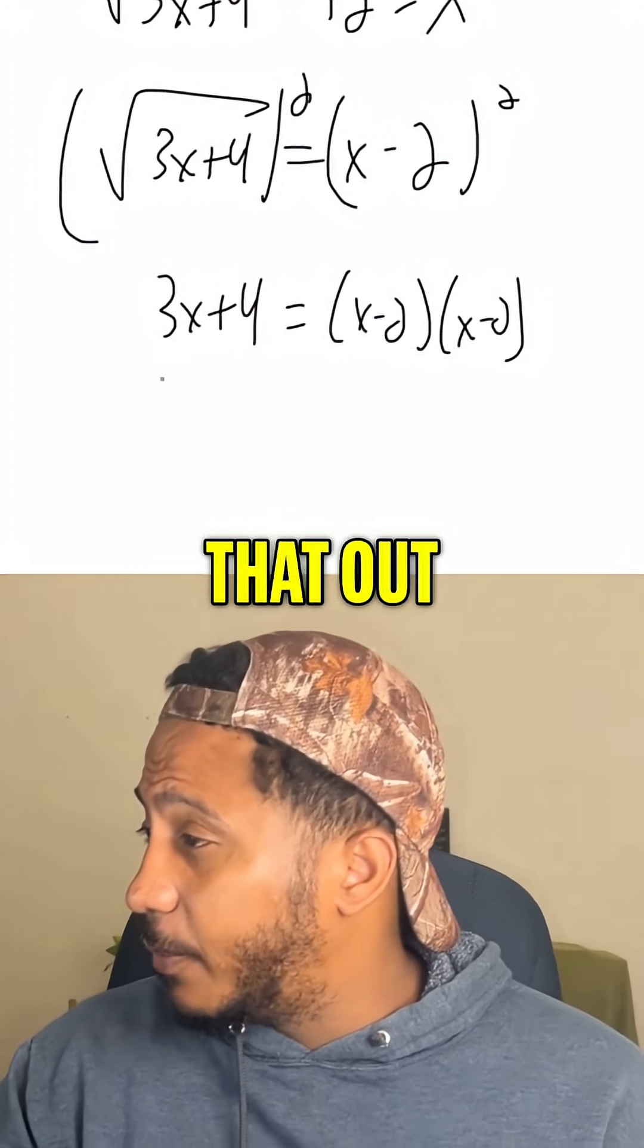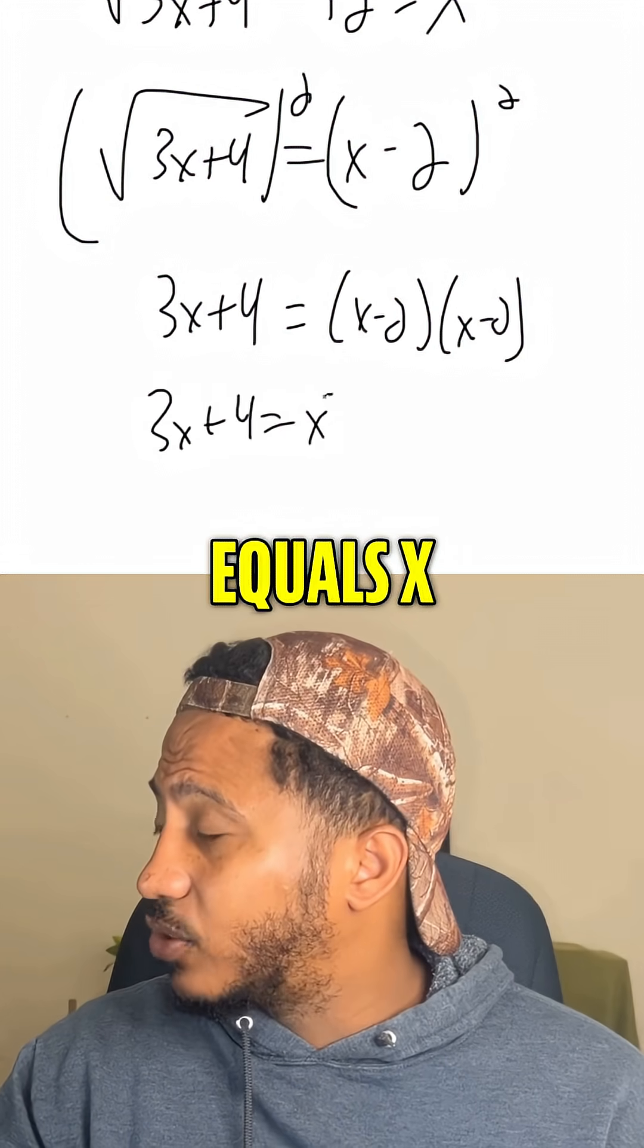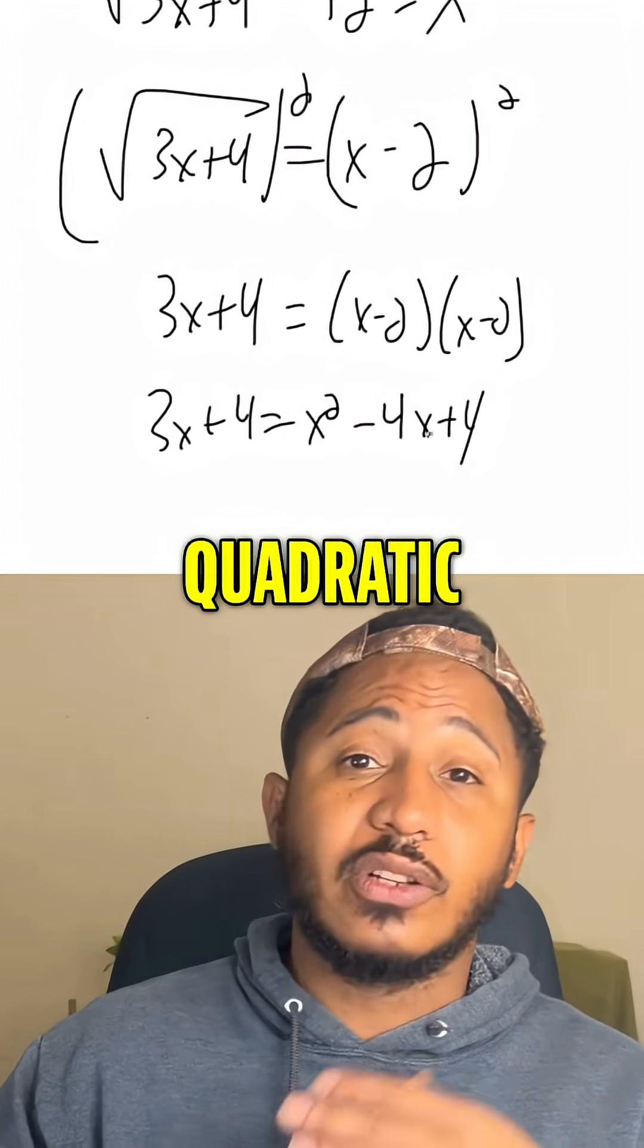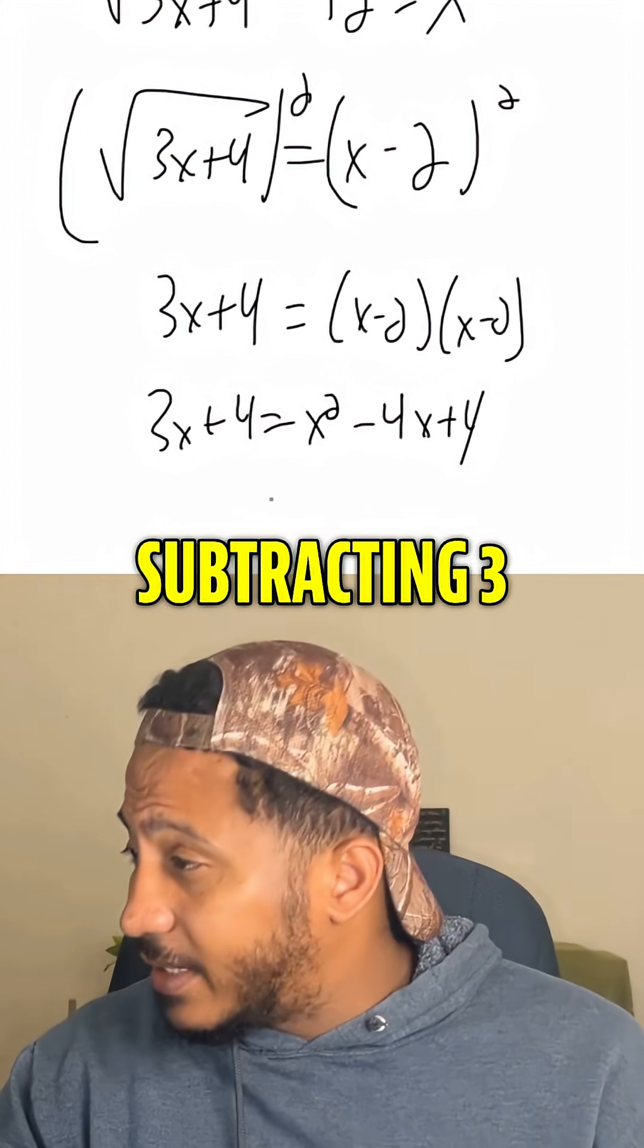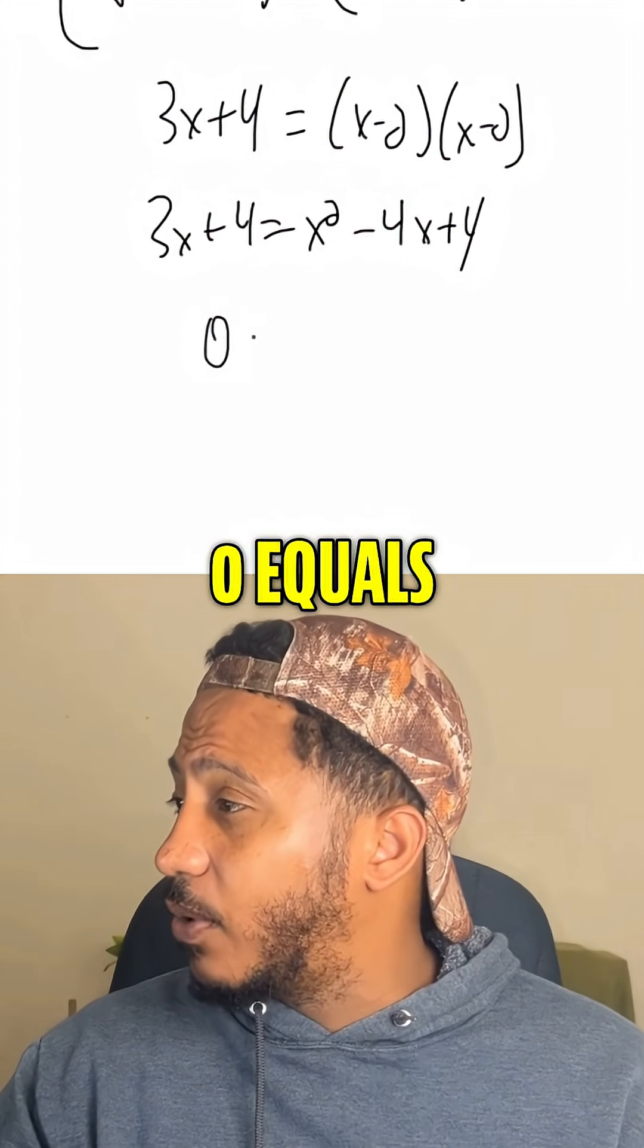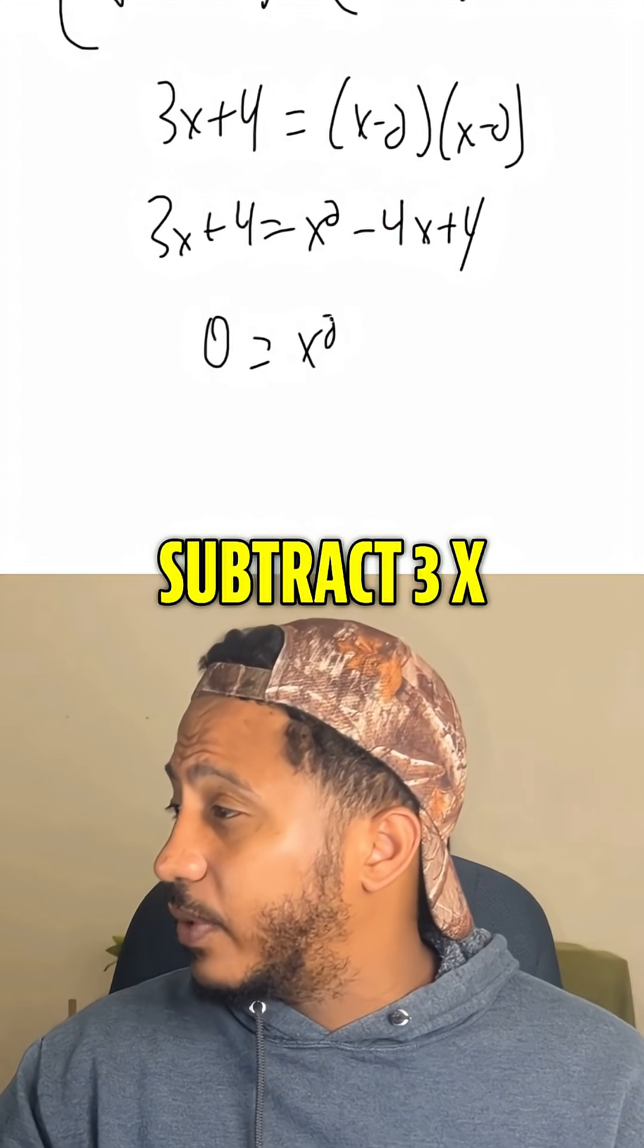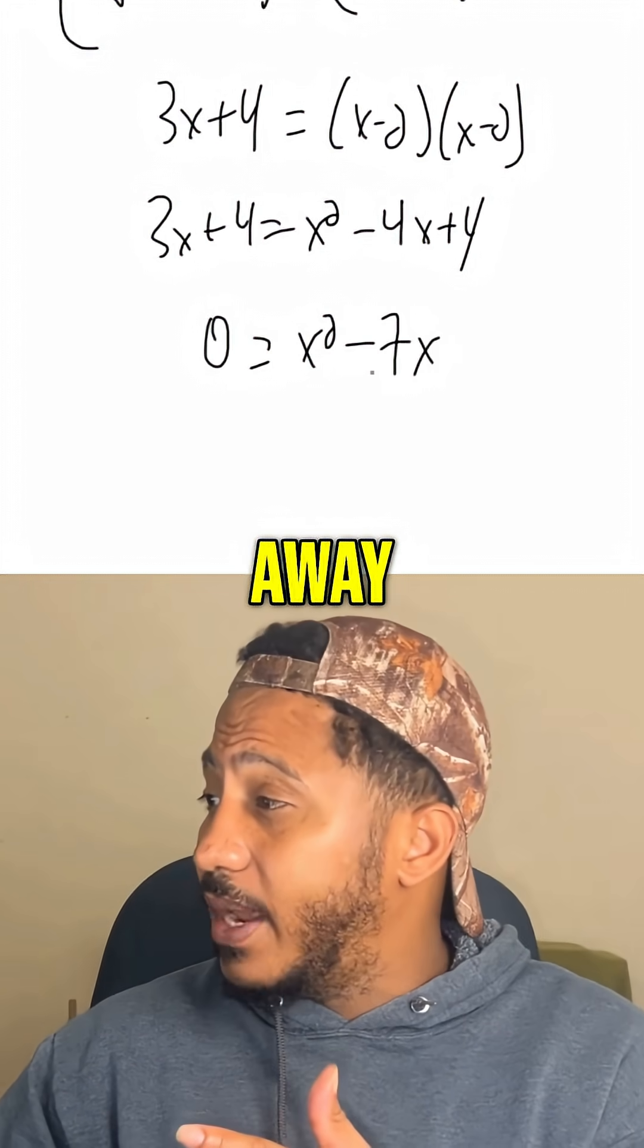I'll find that out, we get 3x plus 4 equals x squared minus 4x plus 4. Now it's a quadratic equation, so subtracting 3x, subtracting 4, we get 0 equals x squared. Subtracting 3x, we get minus 7x, subtracting 4, the 4's go away.